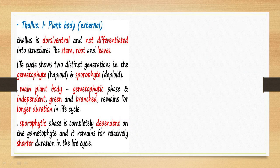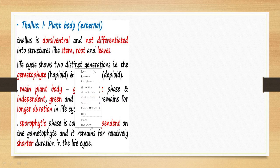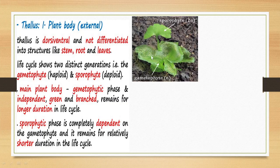Let us now discuss the thallus and the plant body. The thallus is dorsi-ventral and not differentiated into structures like stem, root, and leaves. One important thing to learn here is that this plant has two distinct generations in the process of completing its life cycle — the gametophyte and the sporophyte. The main vegetative part made up of the thallus is referred to as the gametophyte.